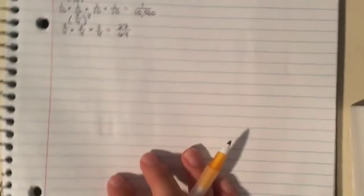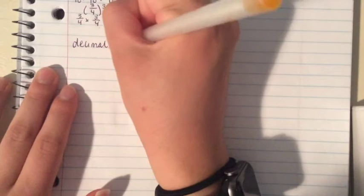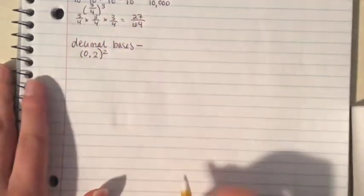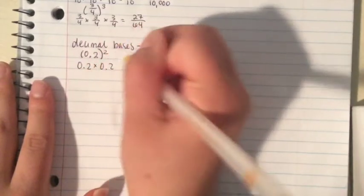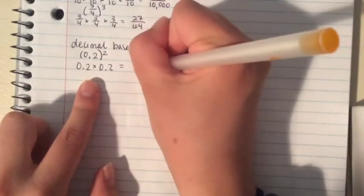It's the same idea if we do decimal bases. So let's try 0.2 squared. This is just 0.2 times 0.2. Remember, when multiplying decimals, we can first multiply 2 times 2, which is 4,